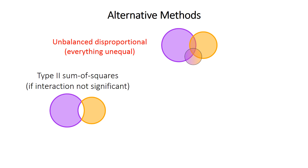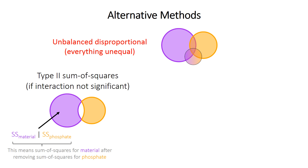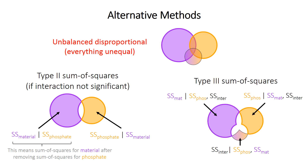There are two alternative methods. First, if the interaction isn't significant, you can use type 2 sum of squares, where each factor gets only the sum of squares unique to it — the overlapping wedge is ignored and not given to anyone. Material gets its sum of squares after removing the part correlated with phosphate, and likewise phosphate gets its sum of squares after removing the overlapping portion with material. If the interaction is significant, there's type 3 sum of squares, where each factor and the interaction are allocated only the sum of squares unique to that component — any overlapping portions are ignored.